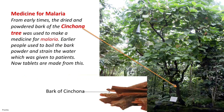If a person is infected by the malarial parasite, they need to take medicine to kill off the parasite in their blood. From early times, the dried and powdered bark of the cinchona tree was used to make medicine for malaria. Earlier, people used to boil the bark powder, strain the water, and give it to patients. Now, tablets are made from this.